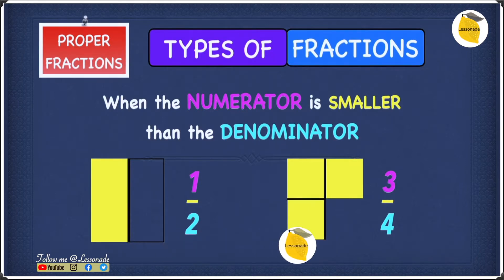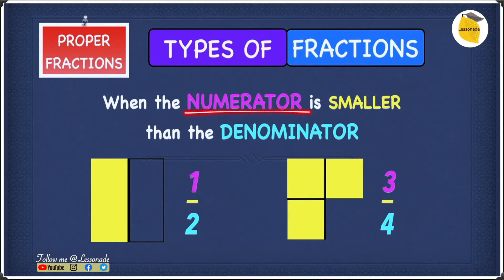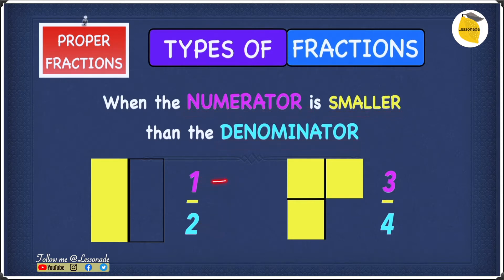Let's have a look at our first type of fraction, which is proper fractions. A proper fraction is when the numerator is smaller than the denominator. The numerator is the number at the top, and the denominator is the number at the bottom. So in our case, the numerator is 1, and 1 is definitely smaller than the denominator, which is 2. So 1 over 2 is a proper fraction.